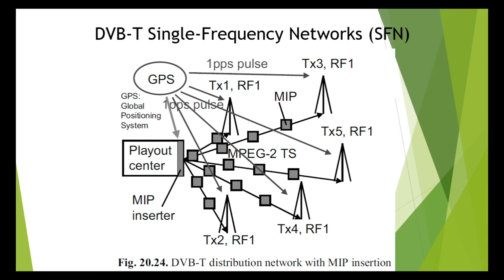A mega frame is composed of an integral number of super frames: 1 mega frame equals 2 super frames in 8K mode, and 1 mega frame equals 8 super frames in 2K mode.